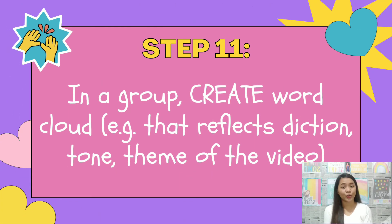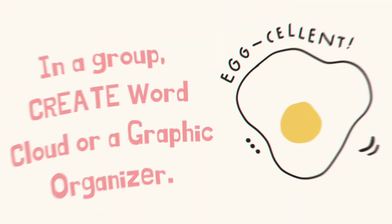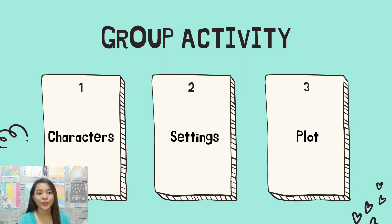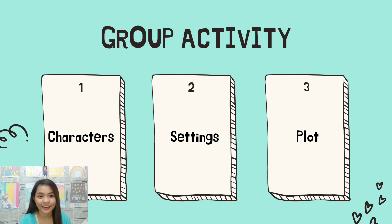Step 11: In a group, create a word cloud — for example, reflection, diction, tone, and theme of the video. I will group you into three. Each group will create a word cloud or graphic organizer. The first group will focus on the characters, the second group on the settings, and the third group on the blend. Are we clear?